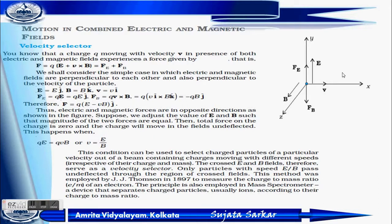If we adjust E and B so the magnitudes of the two forces are equal, the total force on the charge becomes zero. So QE = QVB, giving V = E/B. This condition can be used to select charged particles of a particular velocity from a beam containing charges moving with different speeds.